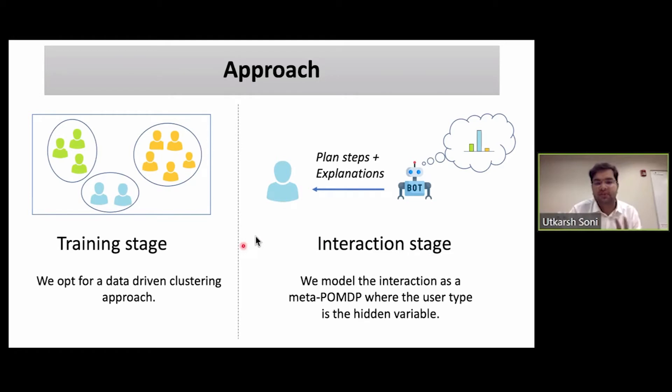So our approach is basically twofold. There's a training stage where we opt for a data-driven clustering approach to determine all the user types, and the second stage is the interaction stage where we model the interaction between the robot and the target user as a meta-POMDP where the user's type, the actual type, is the hidden variable of the state.